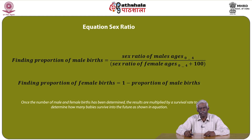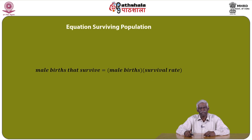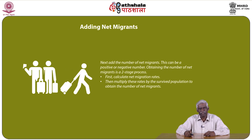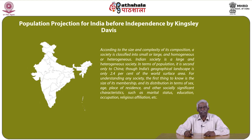Once the number of male and female births has been determined, the results are multiplied by a survival rate to determine how many babies survive into the future. The equation for surviving population is: male births that survive = male births × survival rate. Next, add the number of net migrants, which can be a positive or negative number. Obtaining the number of net migrants is a two-stage process: first calculate net migration rates, then multiply these rates by the survived population to obtain the number of net migrants.